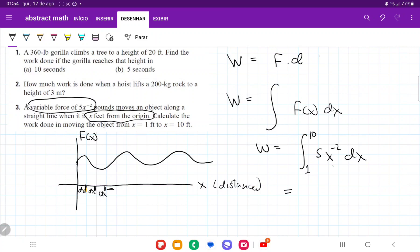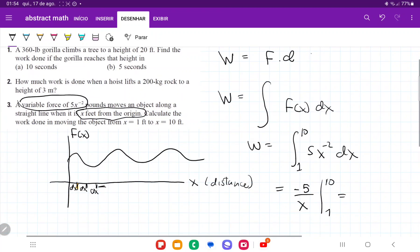And so this is going to be, when we integrate this, it's going to be negative 5 over x. And then we're going from 1 to 10, so we're going to have negative 5 over 10, and then minus negative 5 over 1. And so this is going to be equal to negative 1 half, and then minus minus plus 5, so the answer here is going to be 9 halves.